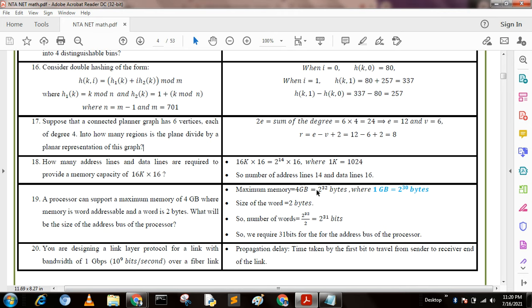Maximum size is 4 GB = 2^32 bytes. Size of word is 2 bytes, so number of words is 2^32 / 2 = 2^31. So we require 31 bits for the address base of the processor.